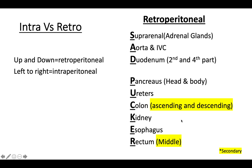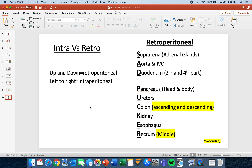Now it's important to note that some of these are highlighted as secondary retroperitoneal, meaning that whenever you were developing as an embryo they were originally intraperitoneal, but then later as you start developing and laying down your colon and intestines, they become retroperitoneal after the fact. I think that wraps up the abdominal vasculature and important points that I think you guys should get to know. I'll see you guys later.